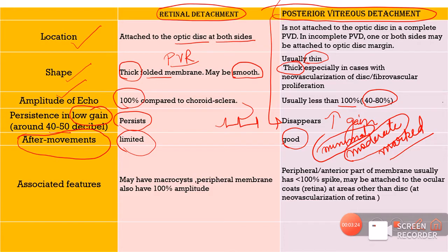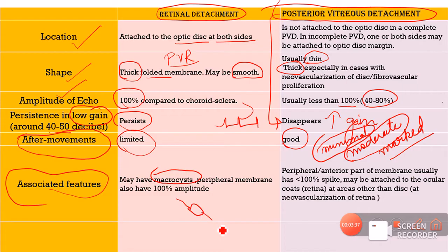What are the other associated features that might be seen with RD and PVD? Number one, in case of RD, we can see the presence of cysts. Such cystic changes in an RD indicate that it is a very old case of RD, and as the RD becomes older, the prognosis becomes poorer. In case of PVD, we might sometimes see membranes which get attached, neovascularization, or fibrovascularization, which will make that PVD thicker in nature.